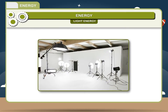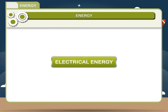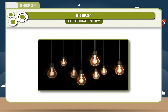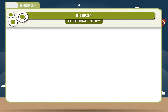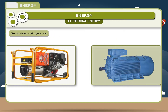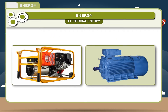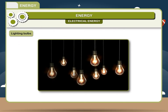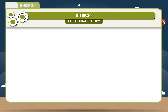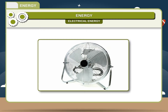Light energy is also required for the recording of images in a photographic film. Electrical energy is one of the most useful forms of energy. It is obtained by generators and dynamos, and used in devices like heaters and ovens to produce heat. It is also used in lighting bulbs, and some objects use it to produce motion, such as electric fans.